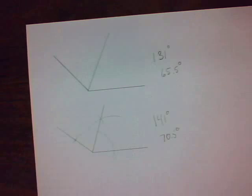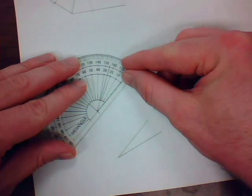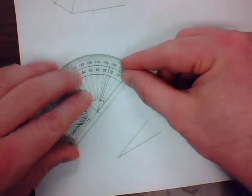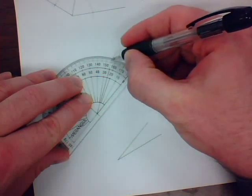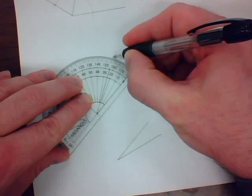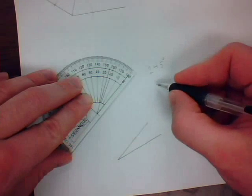Let me demonstrate again using acute angles. The same two techniques. First, using our protractor. Measuring. This is 20. 24.5 degrees.